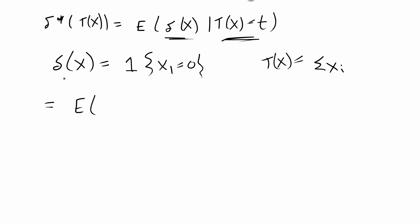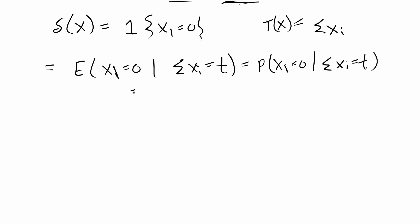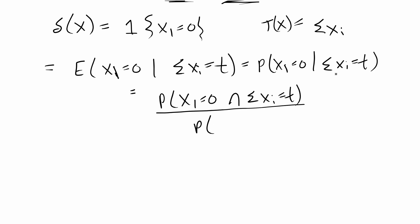We'll plug in our delta of x and t(x) into the formula. That gives us E[1(x1=0) | sum of xi = t], which equals the probability that x1 is equal to zero given that the sum of xi is equal to t. This is just a conditional probability, so we use the formula for conditional probability: P(x1=0 and sum xi = t) over the marginal P(sum xi = t).